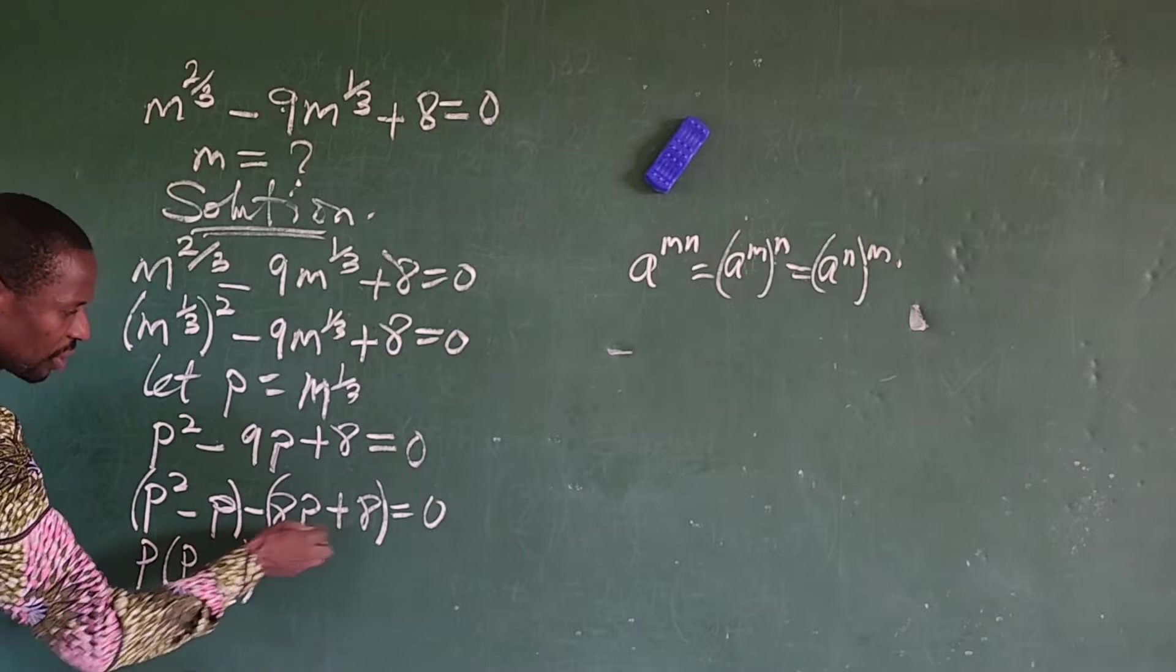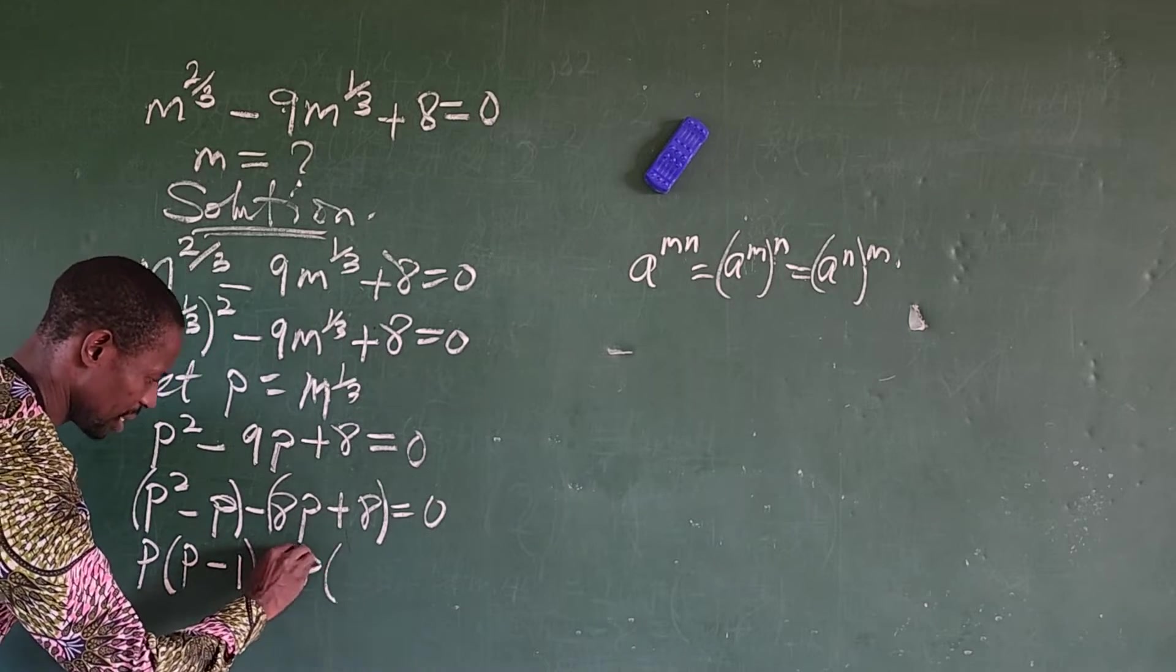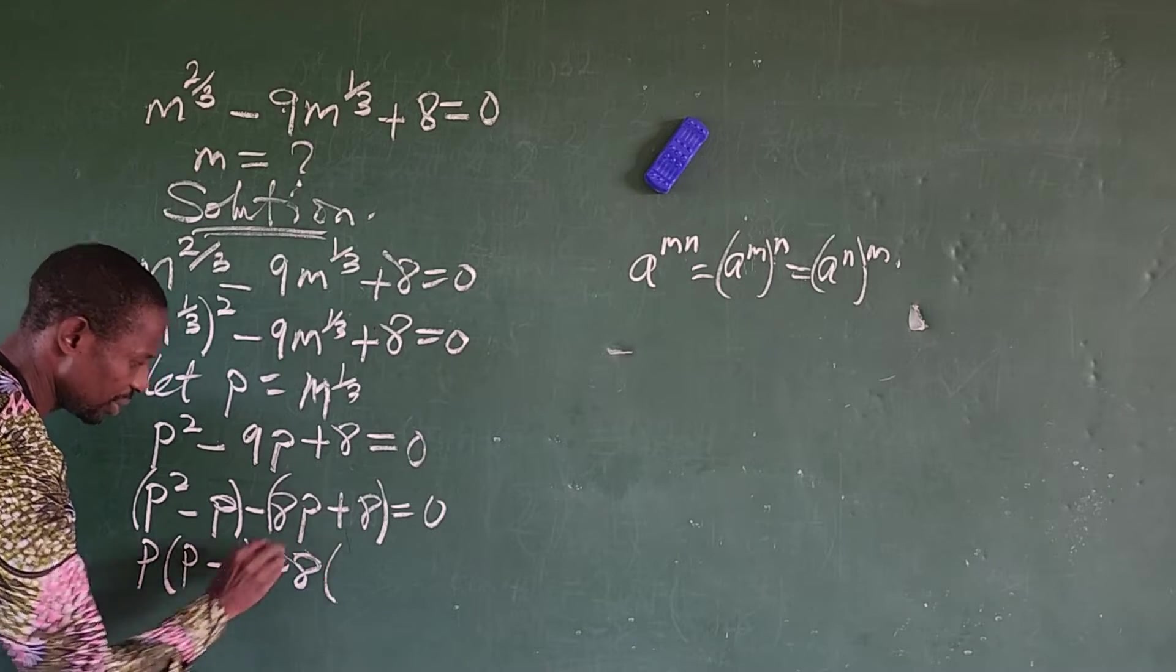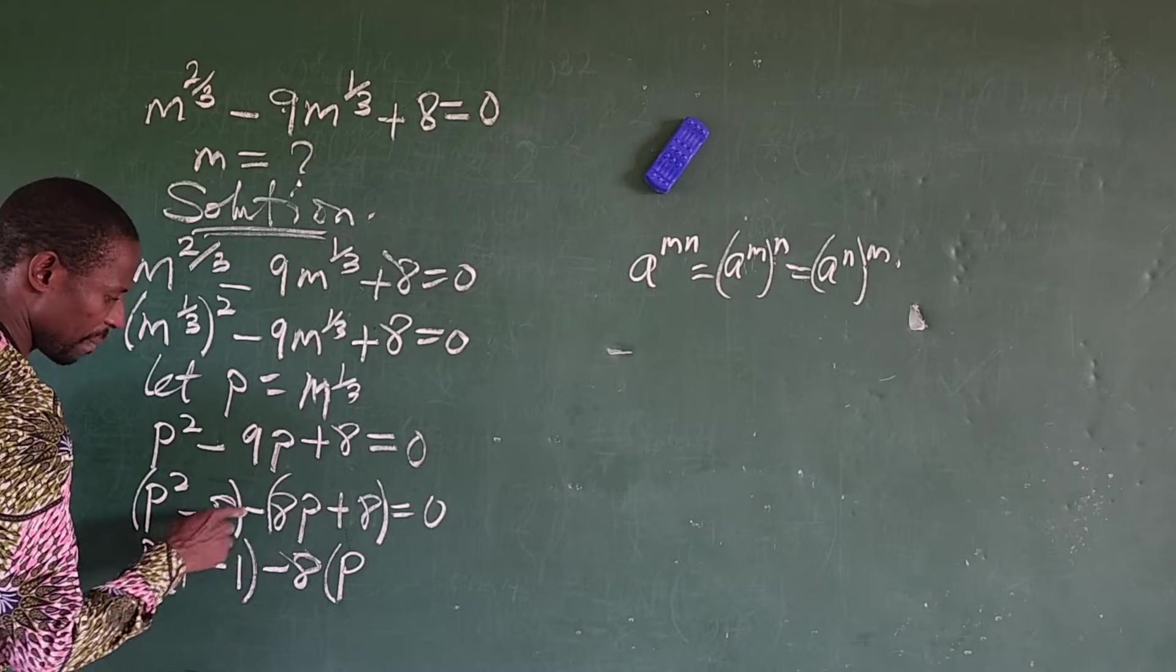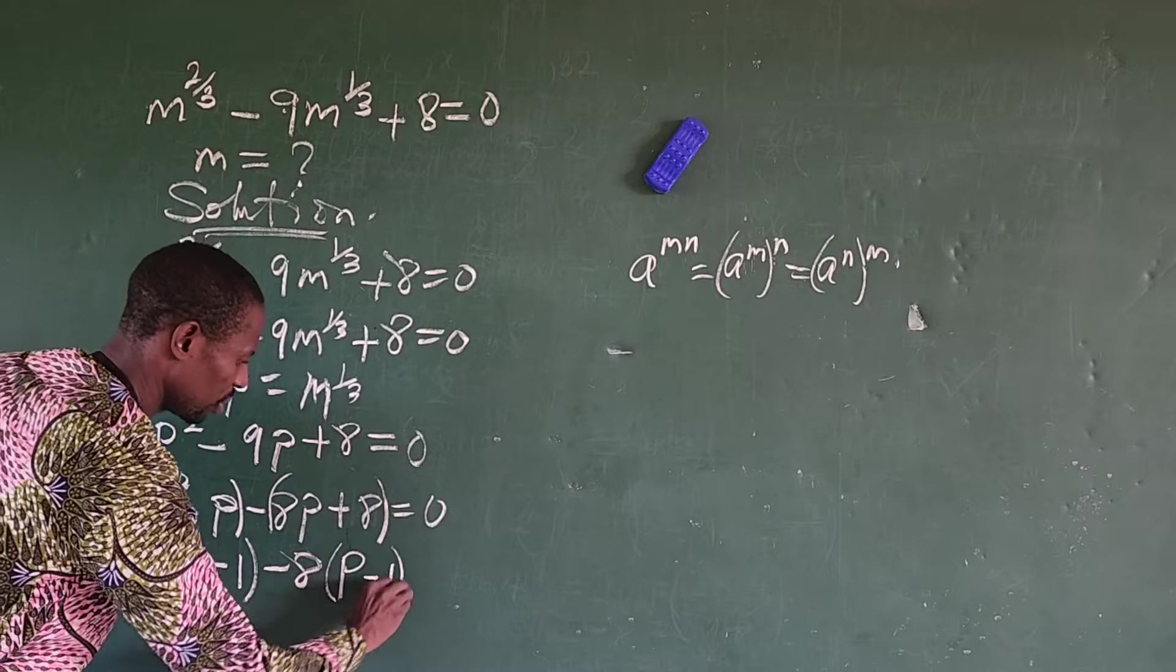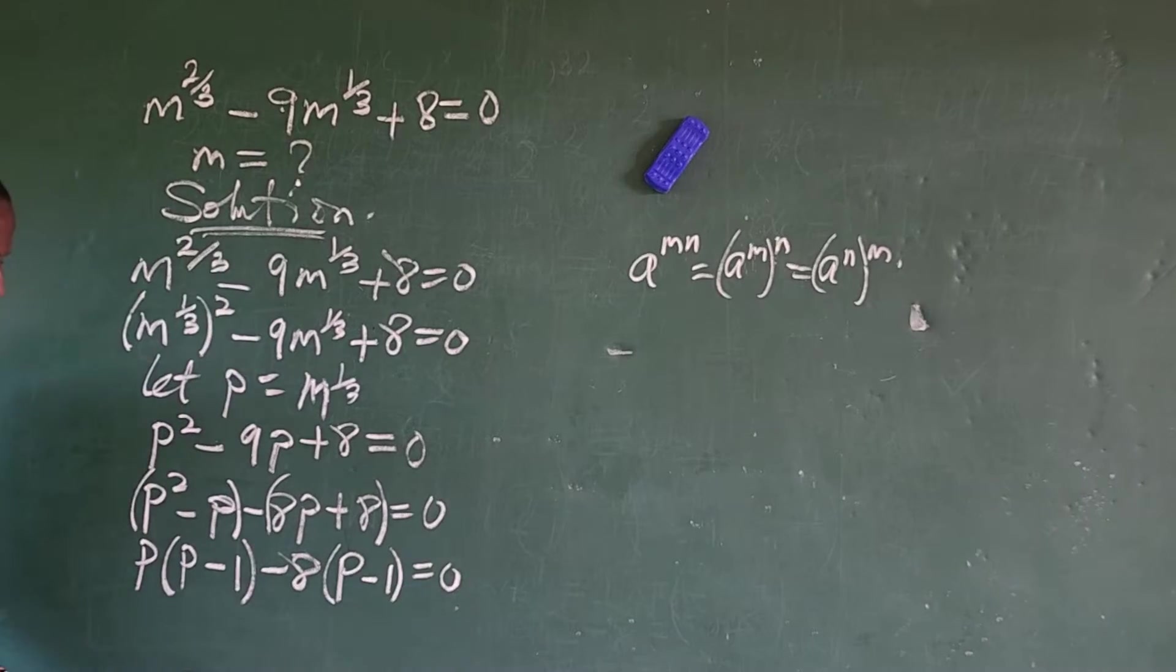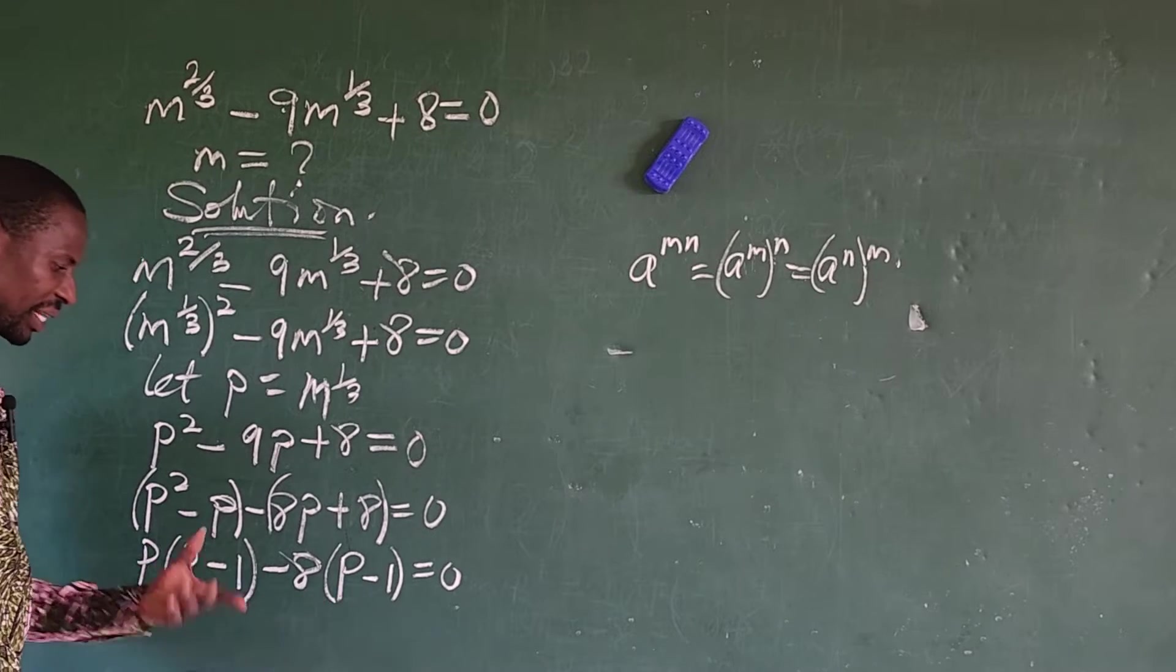Minus p minus 8p will give us minus 9, so that has not changed anything. So we put this in bracket, we also put this in bracket. What is common here is just p. So we have p into p minus 1, then minus 8 is common here.